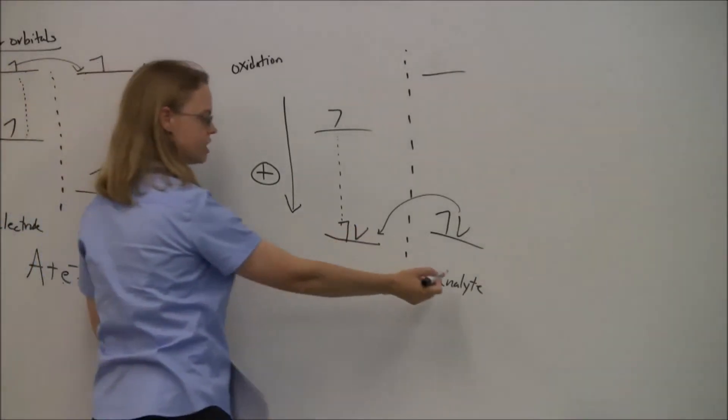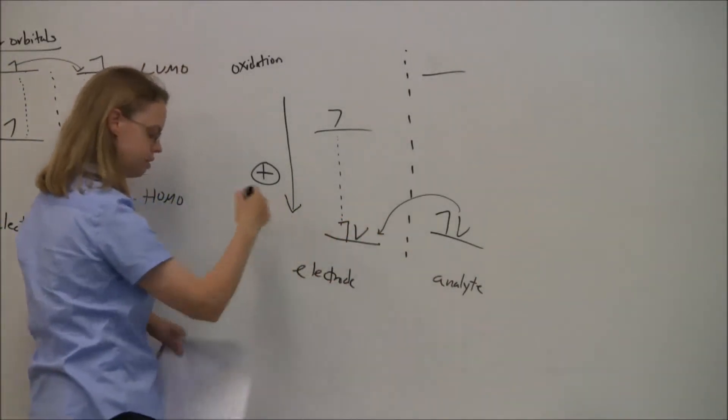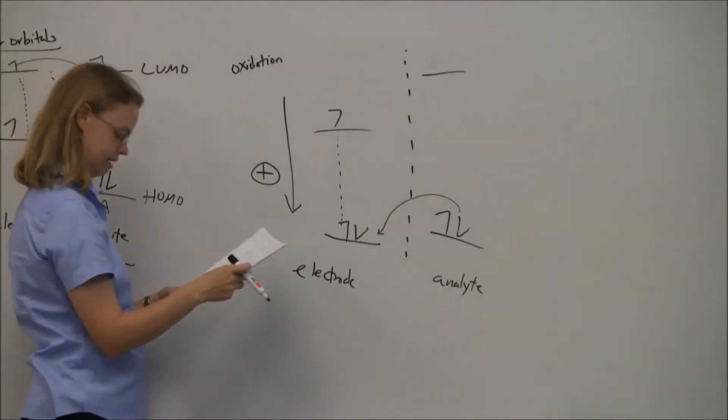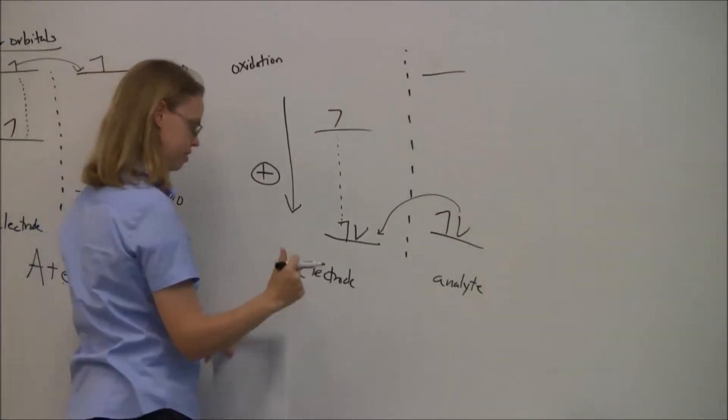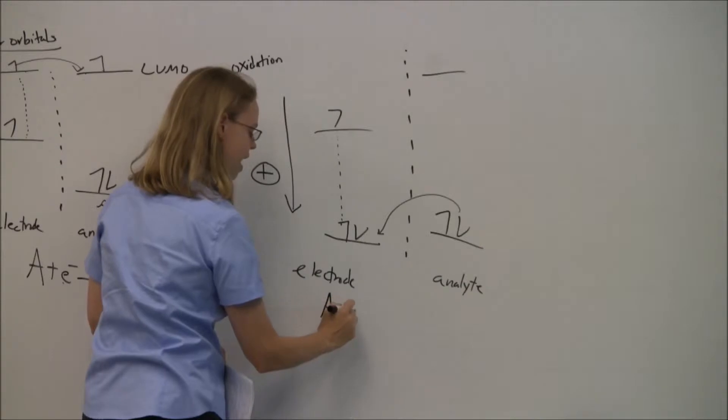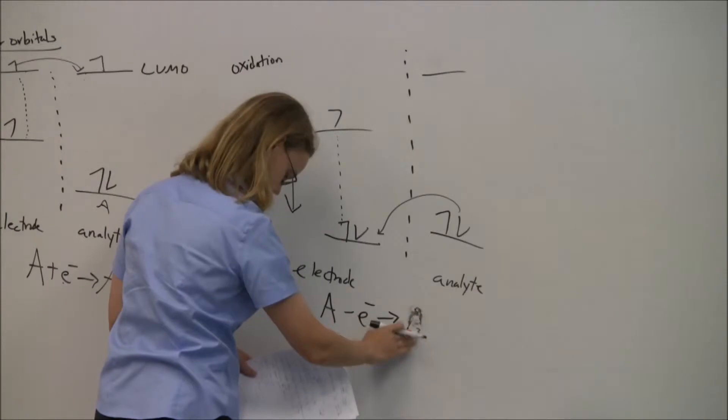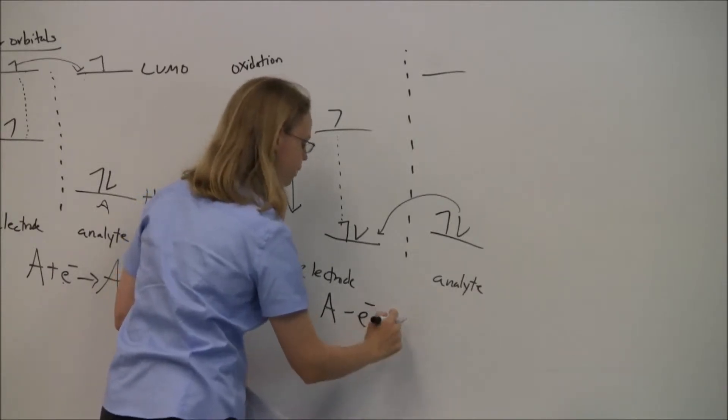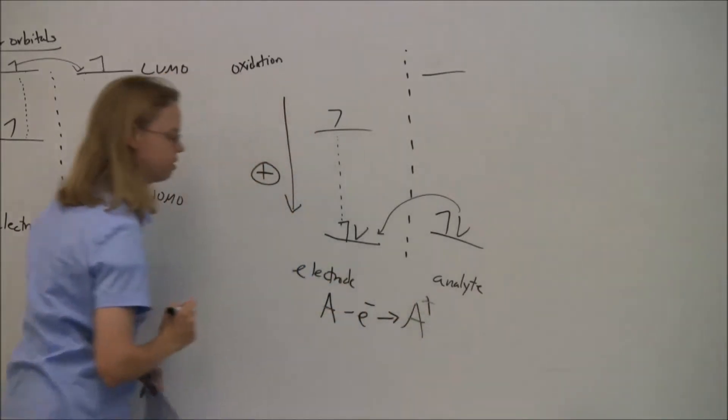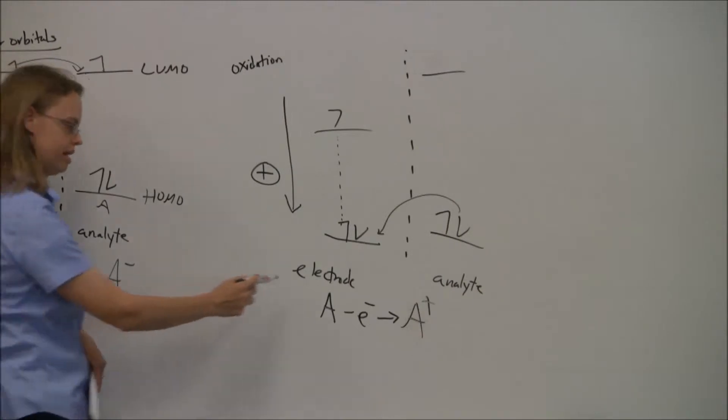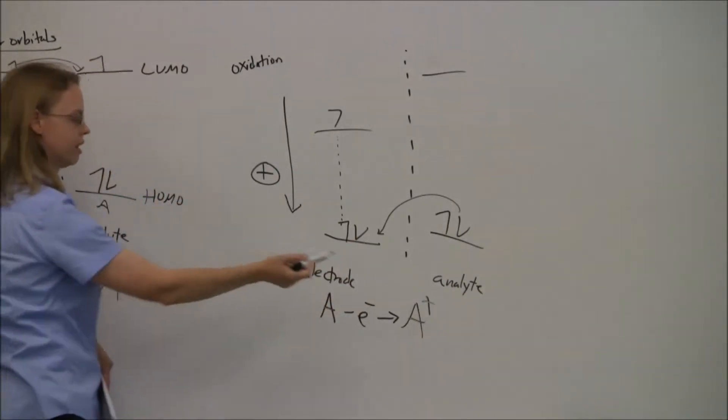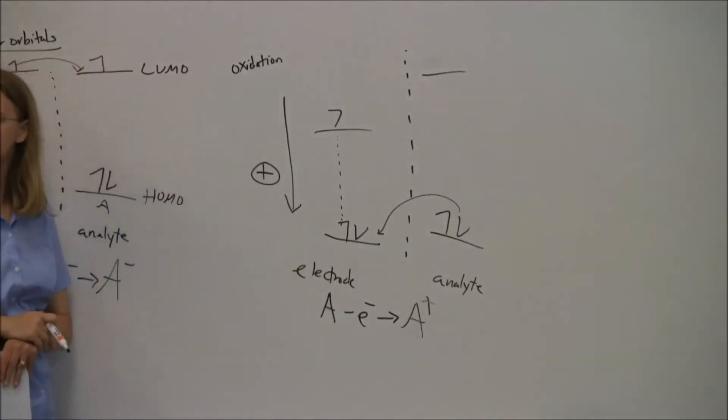That's the electron transferring from the analyte to the electrode - that's oxidation. You might write A minus at electrode goes to A plus, so it lost its electron. What's left over here would be A plus.